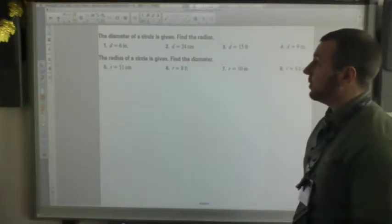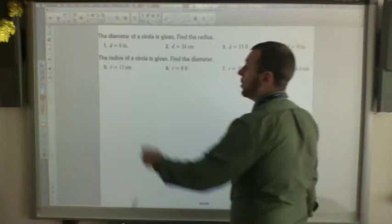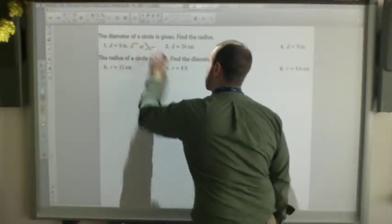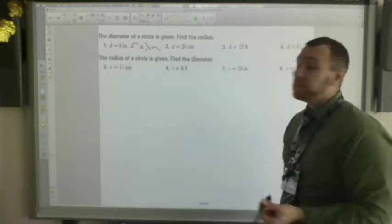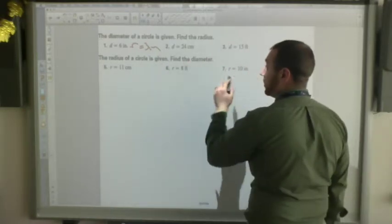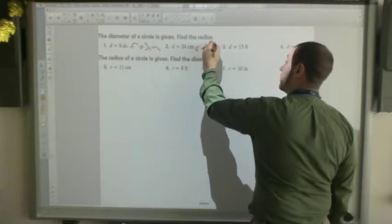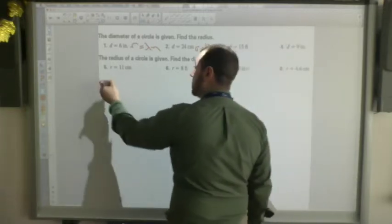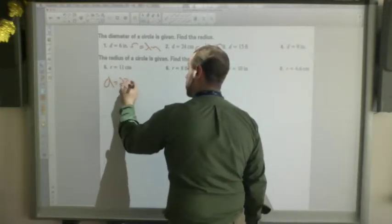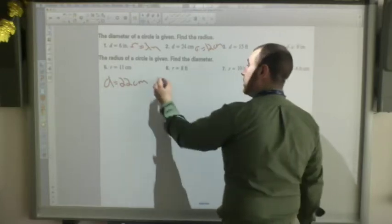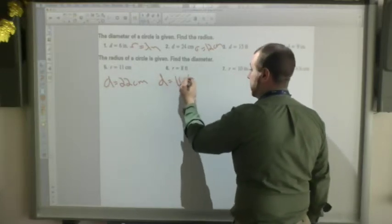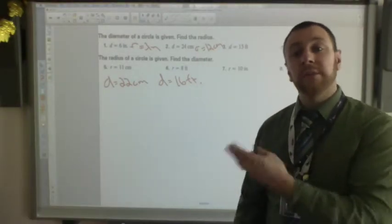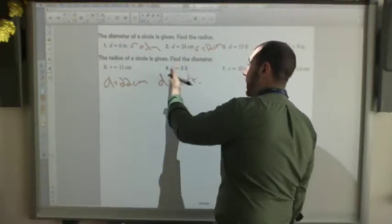The first step I give you the diameter of the circle, you have to find the radius. If the diameter, or D, is six inches, R has to be three inches. You just divide by two. If the diameter is 24 centimeters, the radius has to be 12 centimeters. Same thing with the radius. The radius of the circle is 11 centimeters, the diameter has to be 22 centimeters. If the radius is eight feet, the diameter is 16 feet. It just depends on what information you're given and how it's written.